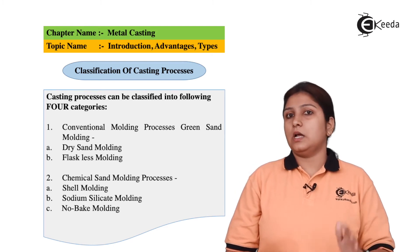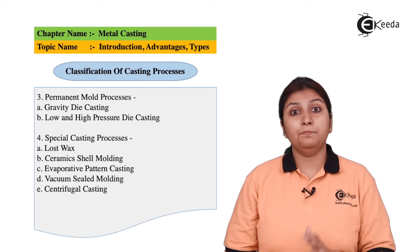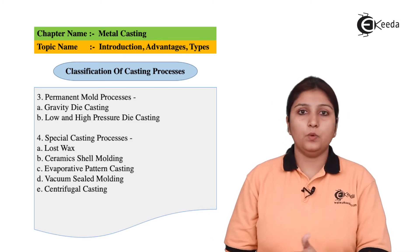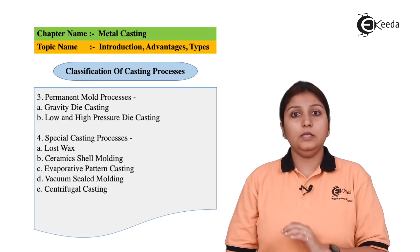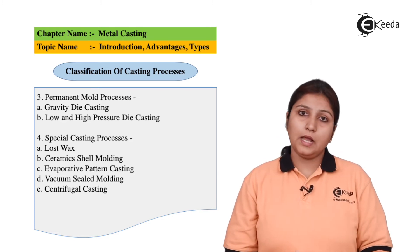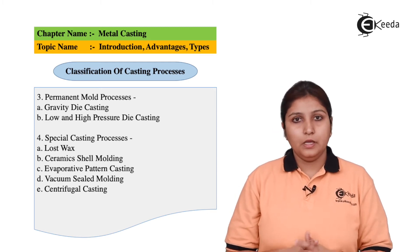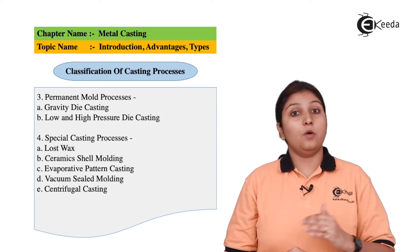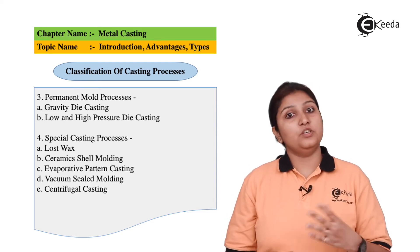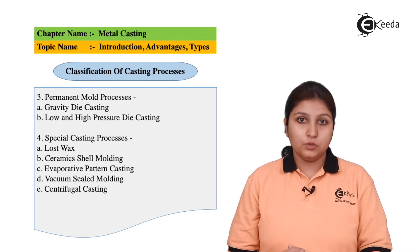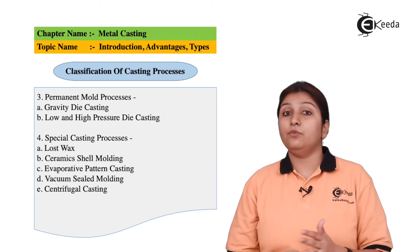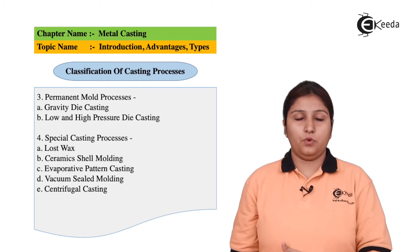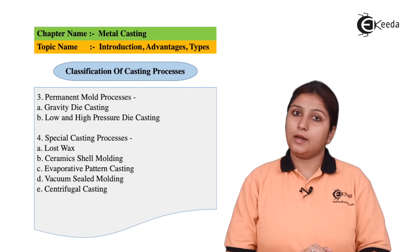The next casting process is permanent mold casting, which involves high or low pressure casting, or gravity die casting. These castings make a permanent mold that cannot be distorted. Then the last type is the special casting process, in which special objects are made using processes like lost wax process, Mercast process, centrifugal casting, and vacuum casting.